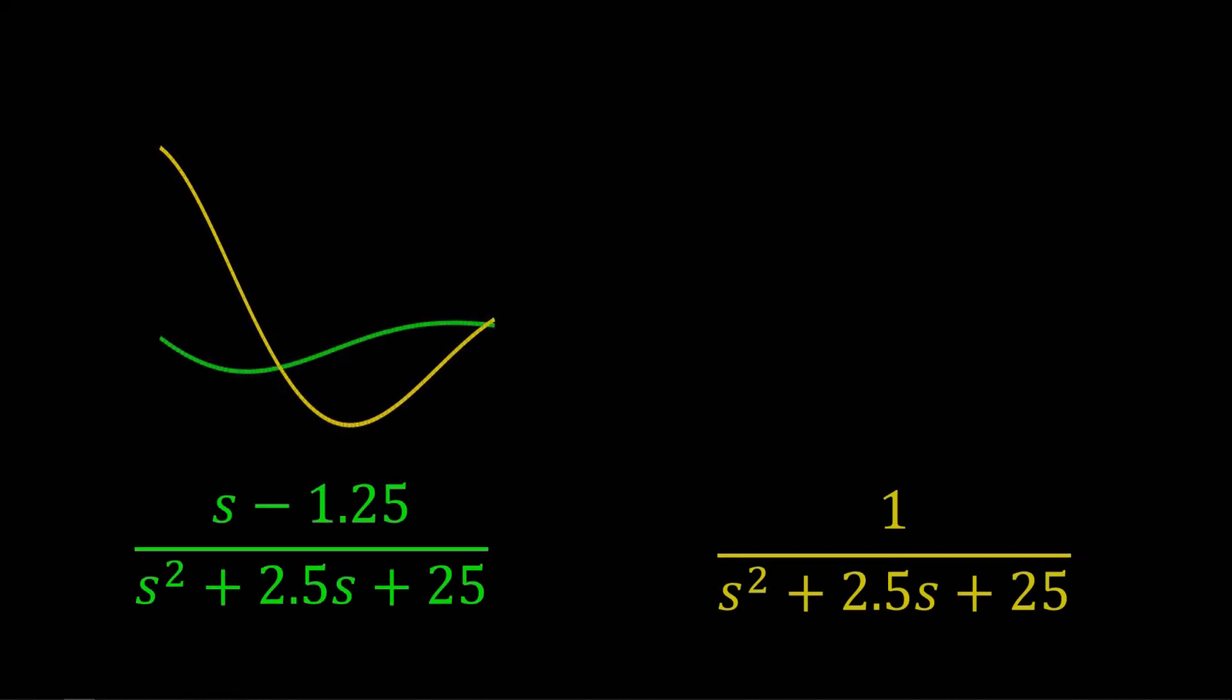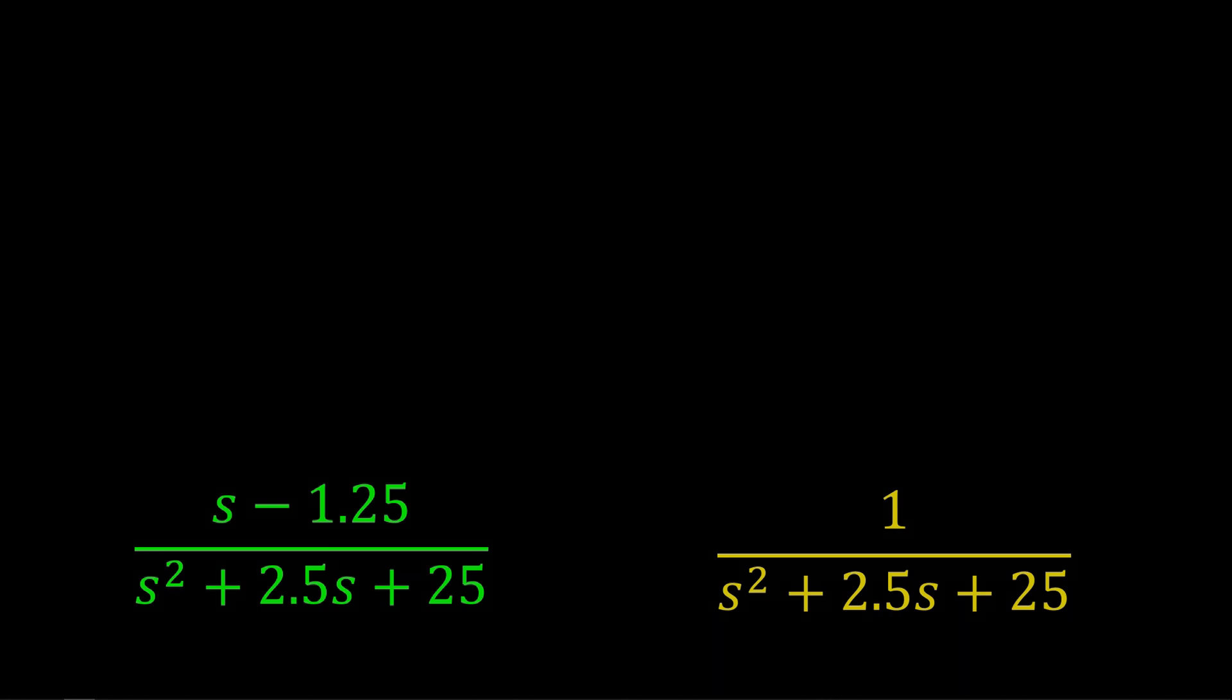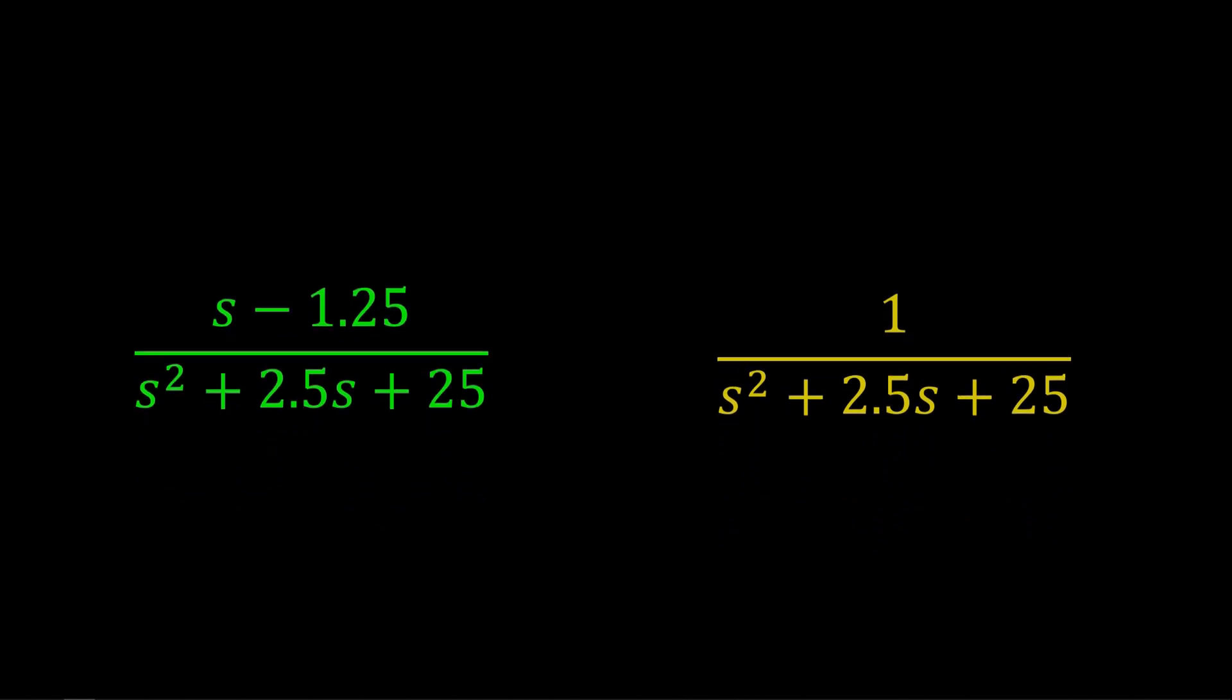These impulse responses come from systems having the same poles, so how can they differ so much? To start, note the transfer function numerators differ.